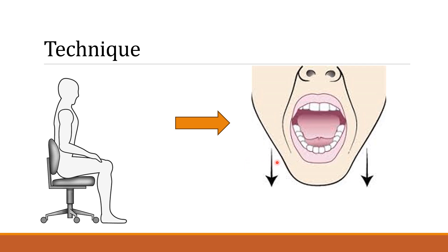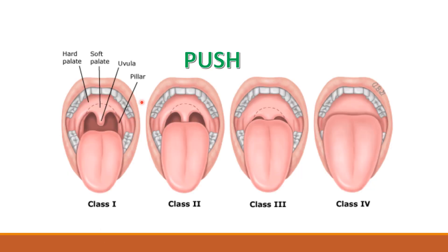We mainly visualize four main structures: the facial pillar, uvula, soft palate, and hard palate. You can remember these using the mnemonic PUSH — P for pillar, U for uvula, S for soft palate, and H for hard palate.